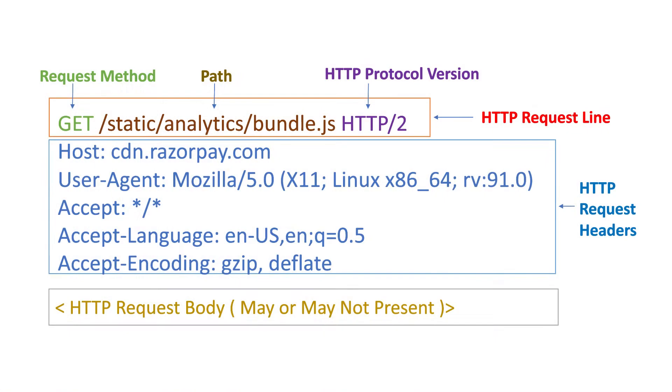The HTTP request method is the first word written in an HTTP request line. These HTTP methods are used to indicate what operation needs to be performed on a specific resource of a website. The resource is basically the path provided in the HTTP request line. For instance, if we want to retrieve the content of a resource then we can use the GET request method. Similarly, if we want to send some data to a particular resource then we can use the POST method.